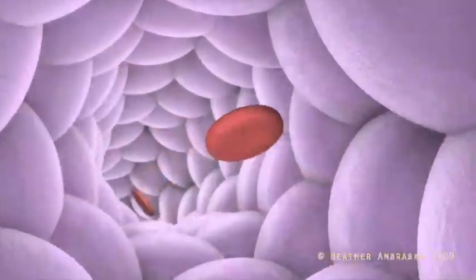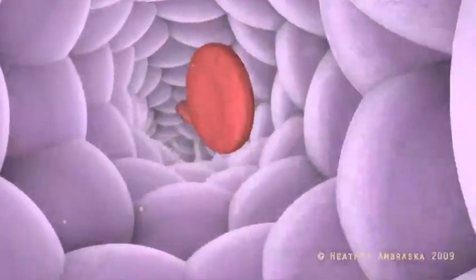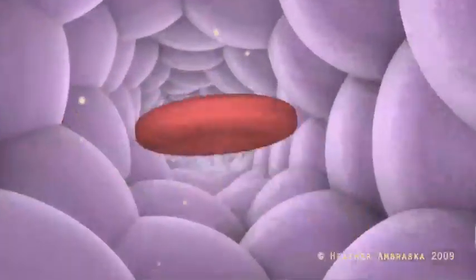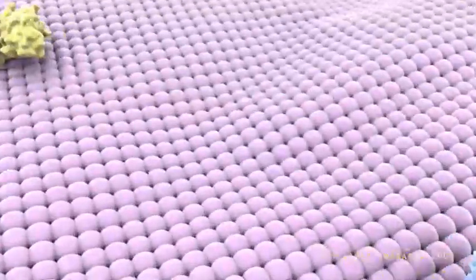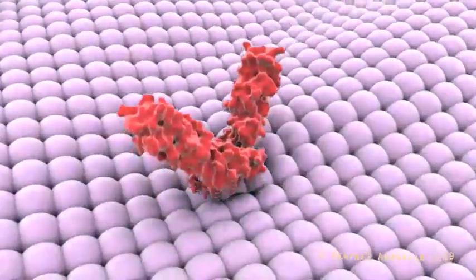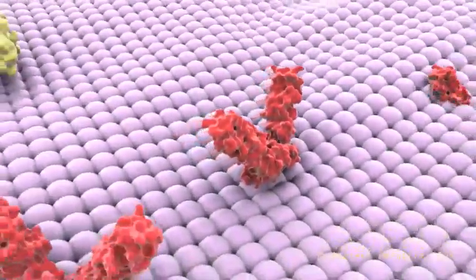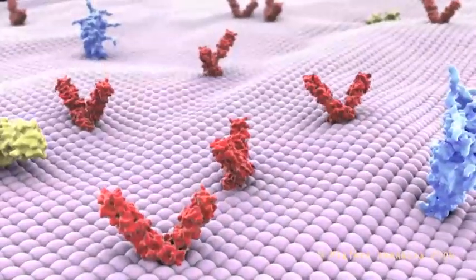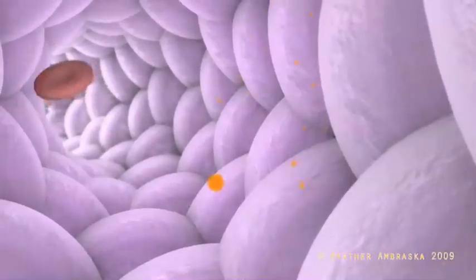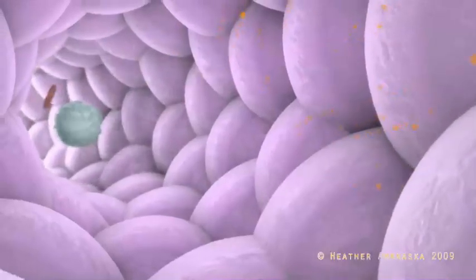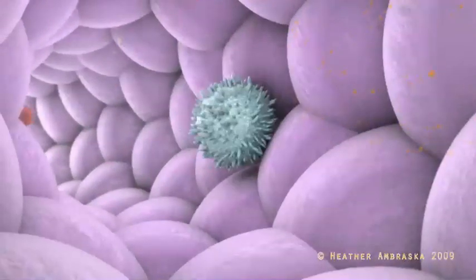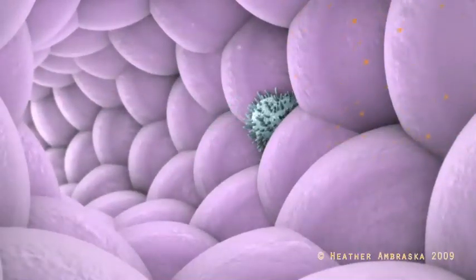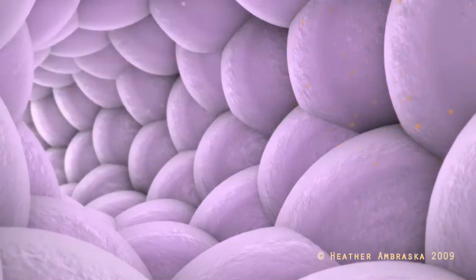In the high endothelial venule, the vessel the T-cell must extravasate through to get into the lymph node, fever increases the expression of thermosensitive molecules. Pro-inflammatory cytokines encourage the T-cell to move across the high endothelial venule at the specific draining node.